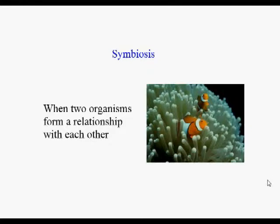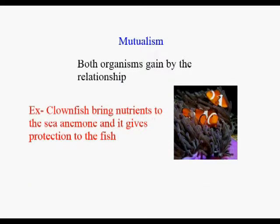Within symbiosis, there are three different ways that it could happen. The first way is mutualism. Mutualism is a symbiotic relationship where both organisms win — they both gain by having a relationship together. So it's win-win.